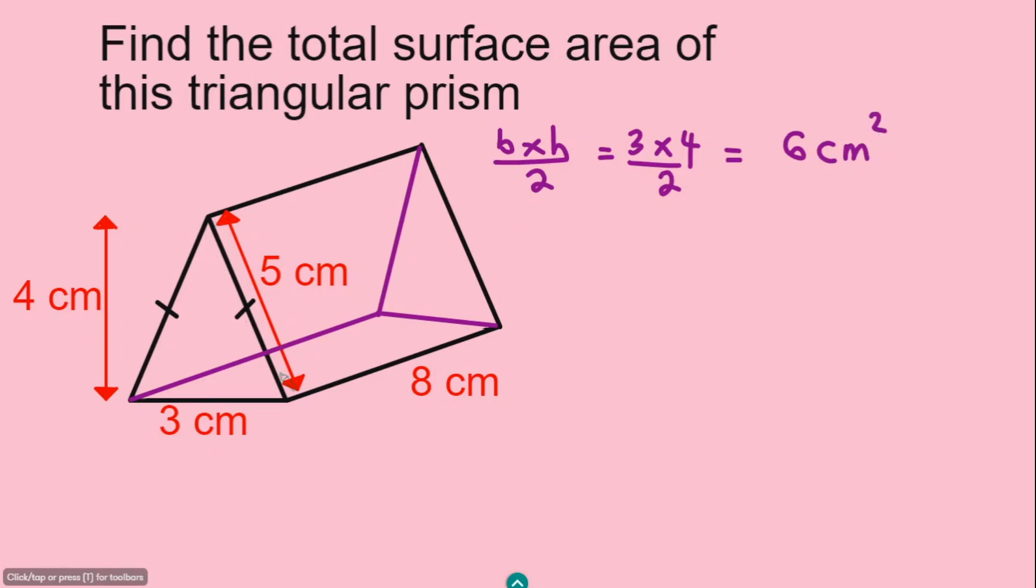And because this triangle here in the front is identical to the one at the back, the area is definitely going to be the same. But I'm just going to show you how this is done. It's going to be 3 times 4 divided by 2, which is 6 cm squared.